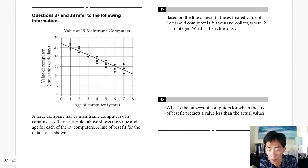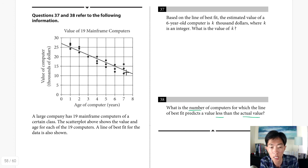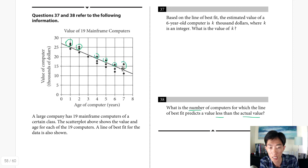Question 38: how many computers does the line of best fit predict a value less than the actual value? This means counting the dots that lie above the line (actual value exceeds predicted). Counting them: 1, 2, 3, 4, 5, 6, 7, 8, 9 — the answer is 9.